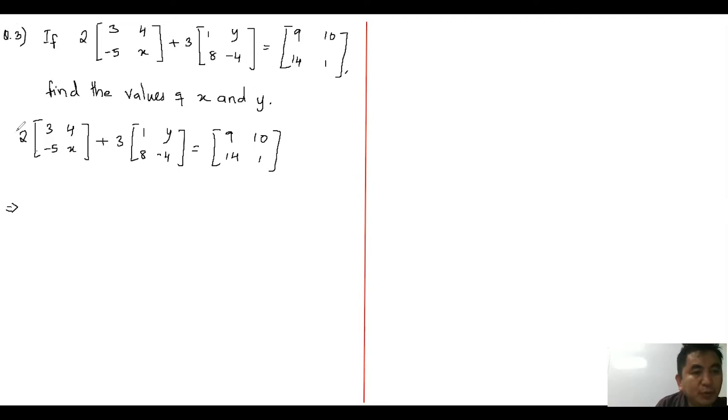First, put these two inside. It's always better to put inside, do not keep outside. Put these two inside. We have here two threes are six, two fours are eight, negative ten, two x.